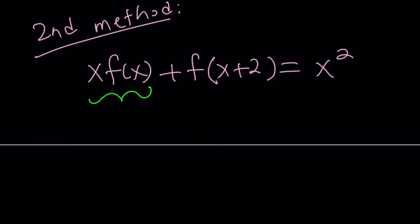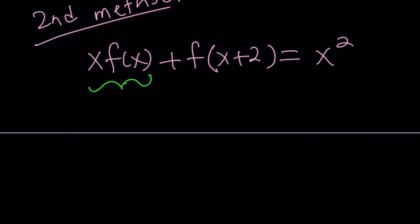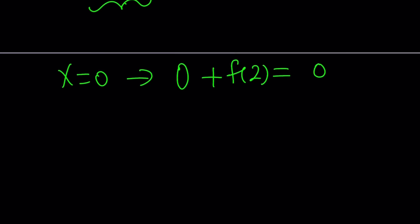I hope it does. These are basic functional equations that don't require that much process. So let's go ahead and replace x with 0 everywhere. If you do that, you're going to get 0 plus f of 2 equals 0. What does that tell you? This tells you that f of 2 is equal to 0.